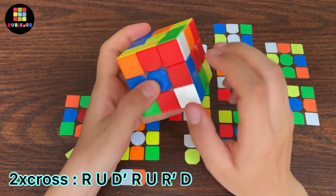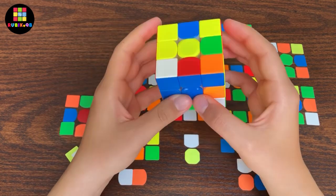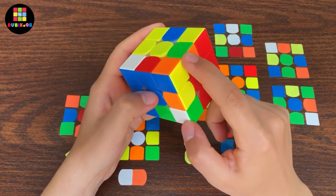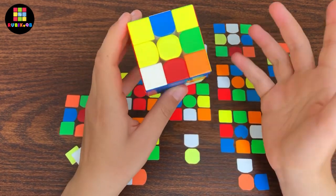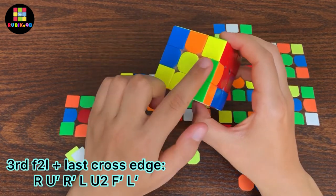He saw the third F2L pair and the last cross edge at the same time. He paired them up to lock this, then inserted this part into the back slot.